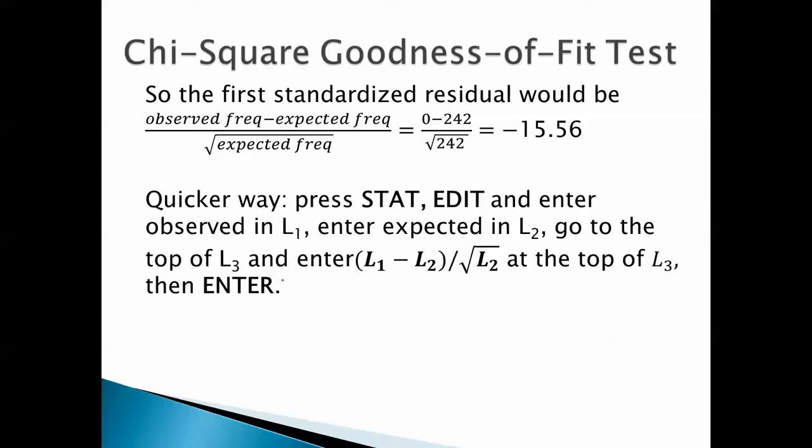There's a quicker way we can do that. We can press stat, edit, enter observed in L1, expected in L2, go to the top of L3, and enter (L1 minus L2) over square root of L2 at the top of L3, and then enter.